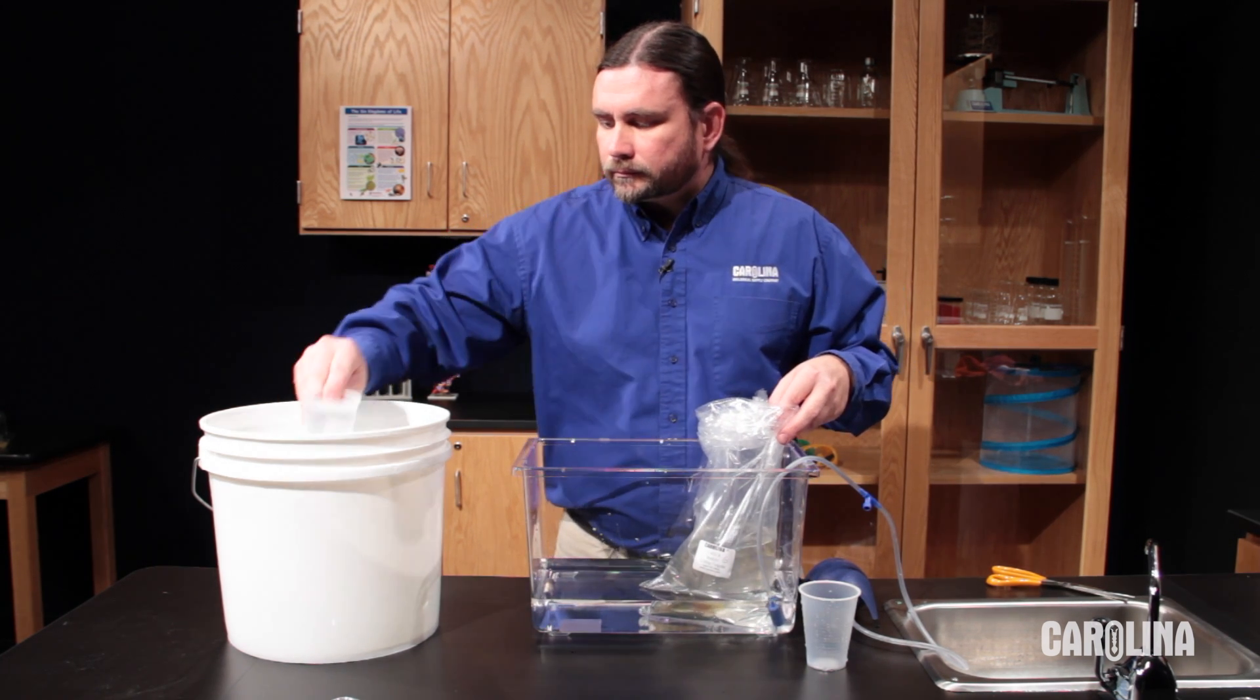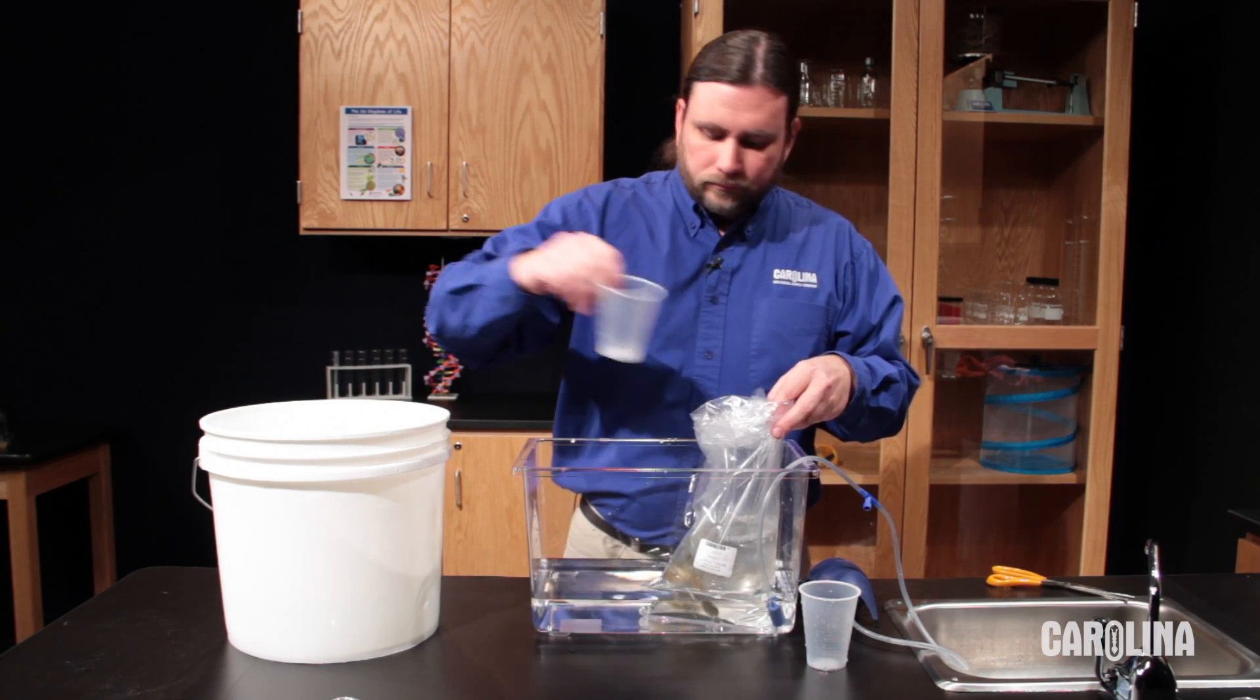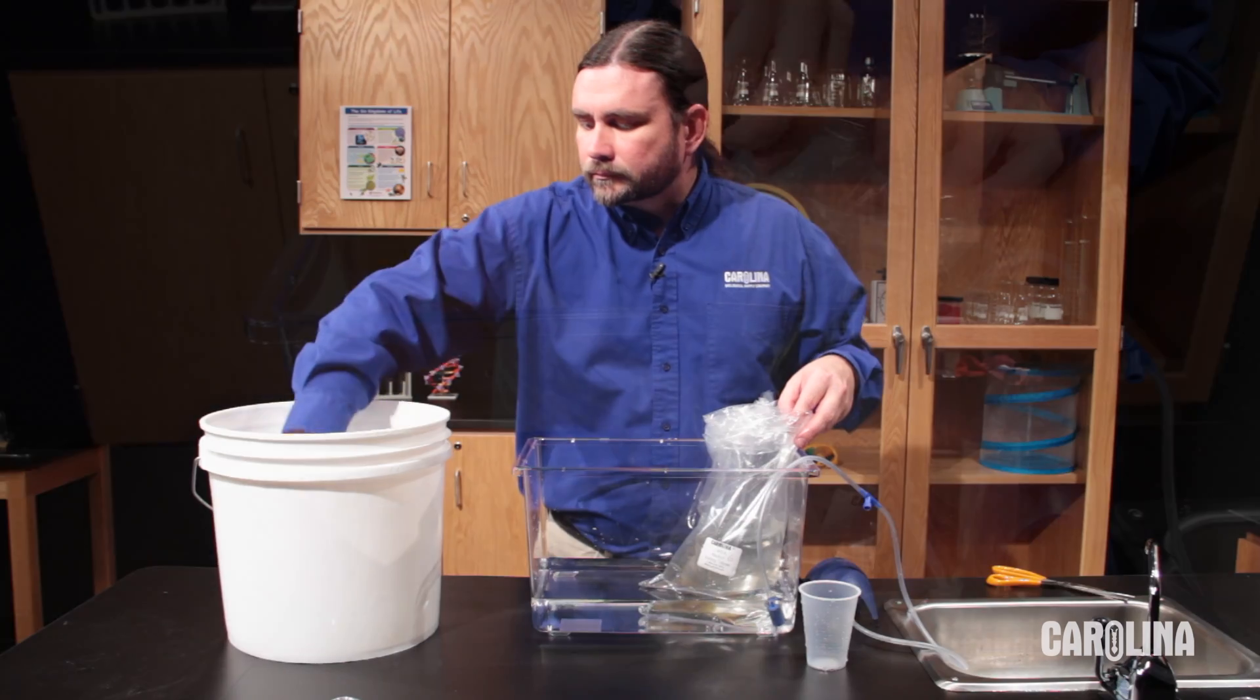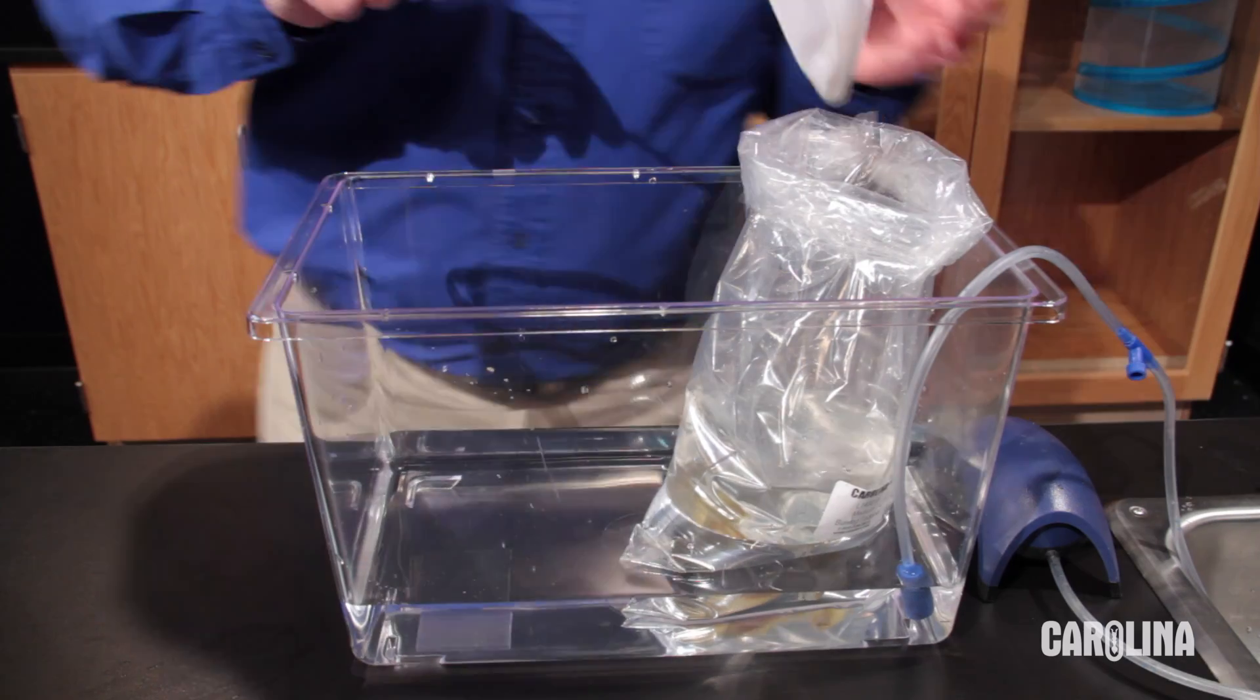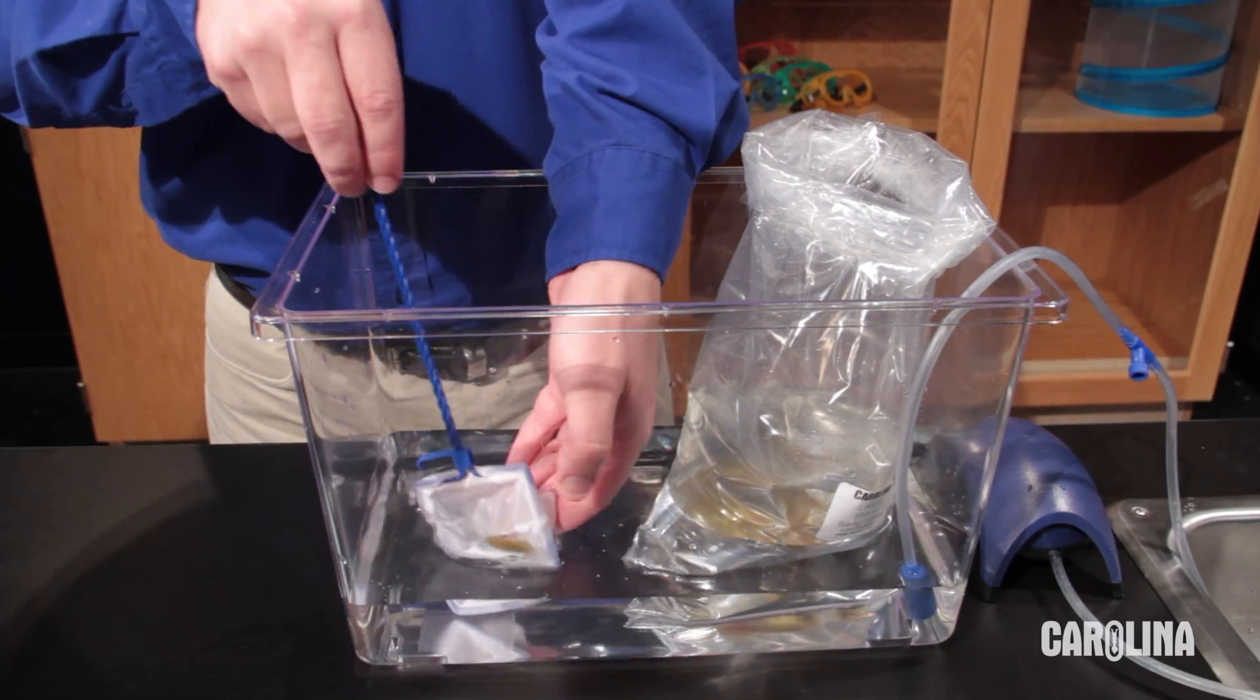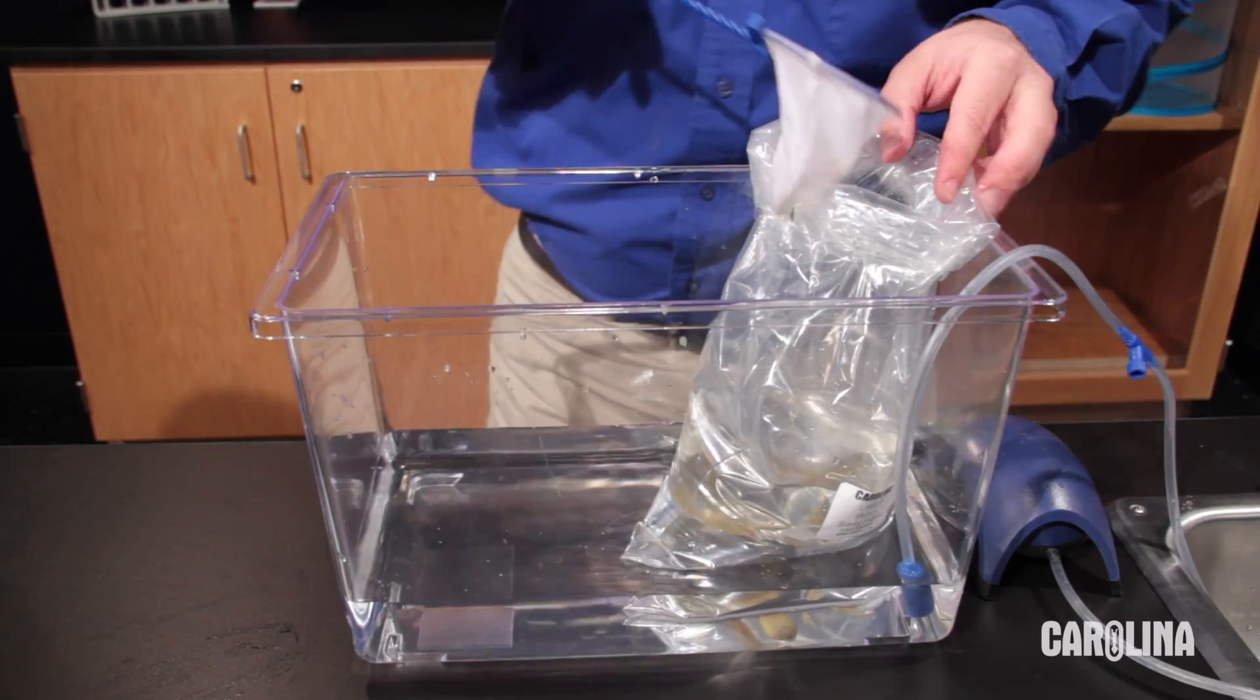Use two separate cups, one for scooping out the shipping water and one for adding the treated tap water or spring water. Repeat this every 10 minutes for one hour. At the end of the acclimation process, use a net to scoop out the tadpoles and place them in their new home. Avoid transferring any of the shipping water.